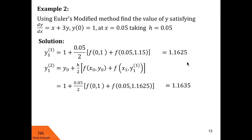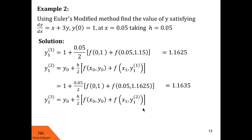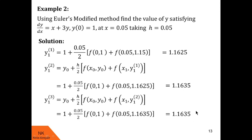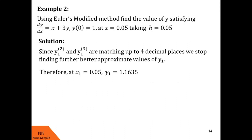y11 and y12 match up to two decimal places. We find one more: y13 = y0 + (h/2)·[f(x0, y0) + f(x1, y12)], giving y13 = 1.1635. y12 and y13 match up to four decimal places, so we stop. The value of y1 is 1.1635, correct up to four decimal places. Therefore, the required solution at x = 0.05 is 1.1635.